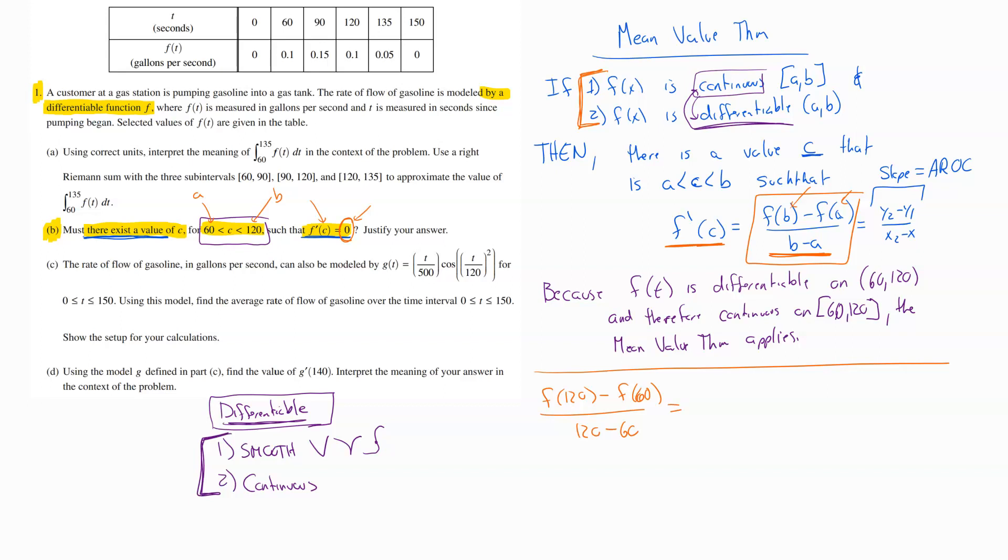Well, we can find these values off of our table. So at 120, we have a y value of 0.1, so 0.1 minus, and then at 60 we've got another y value of 0.1. How convenient. And all of that is over 120 minus 60, which is 60. On the top, 0.1 minus 0.1 gives us 0 over 60, and so that equals 0.